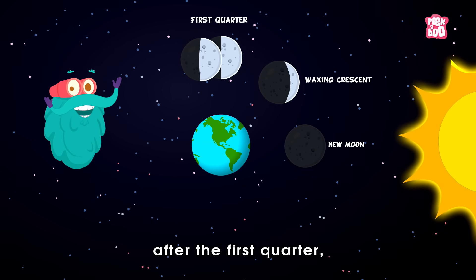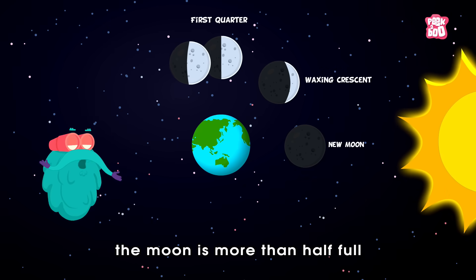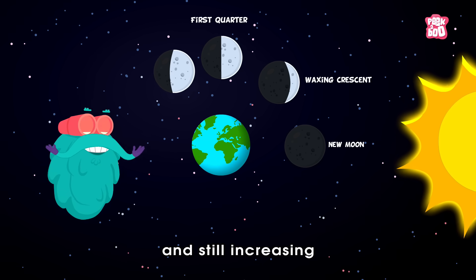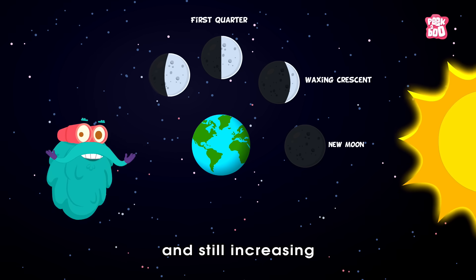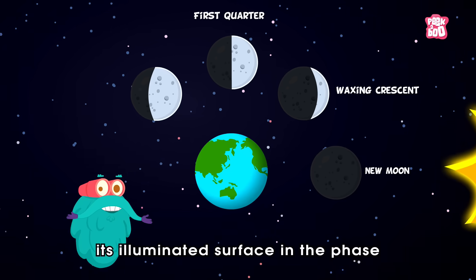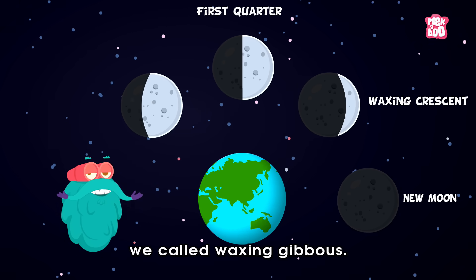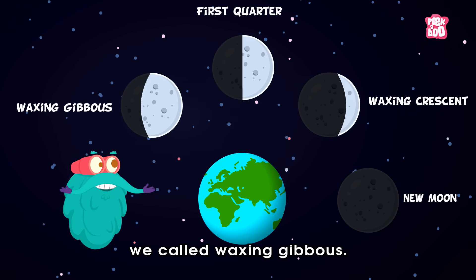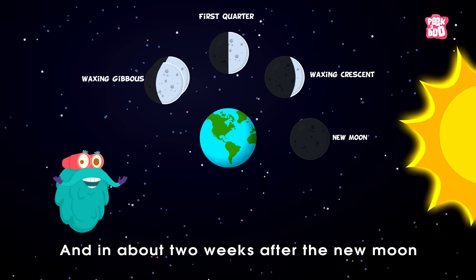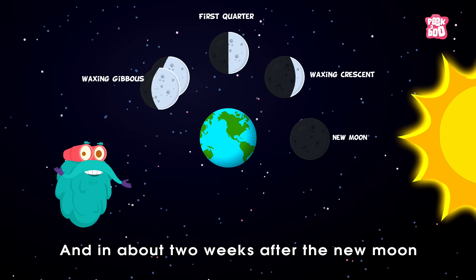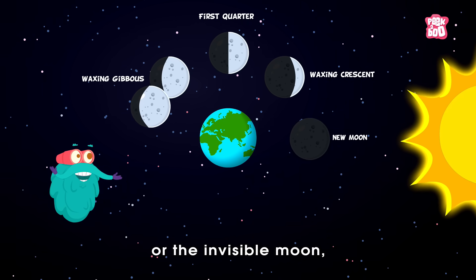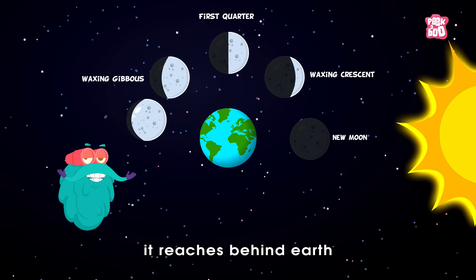Next, in about two or three days after the first quarter, the moon is more than half full and still increasing its illuminated surface, in the phase we call waxing gibbous.